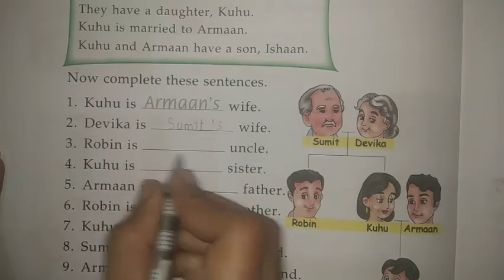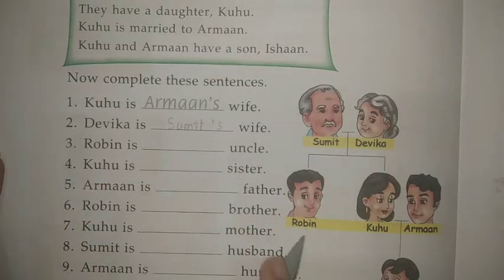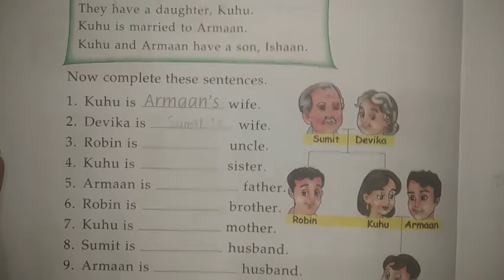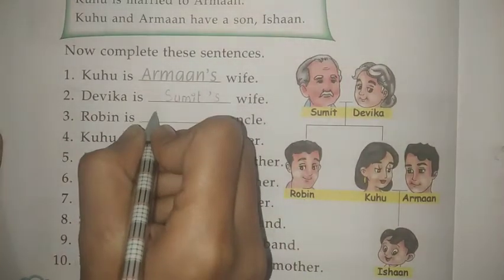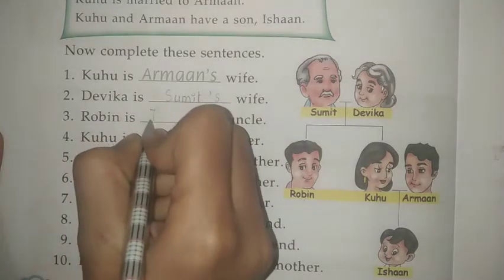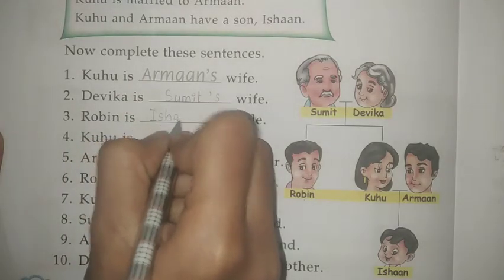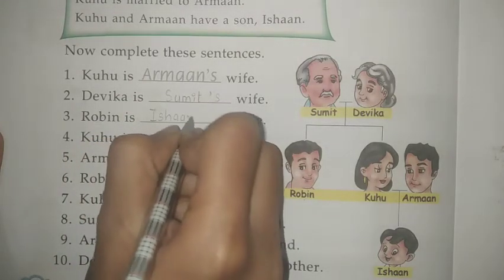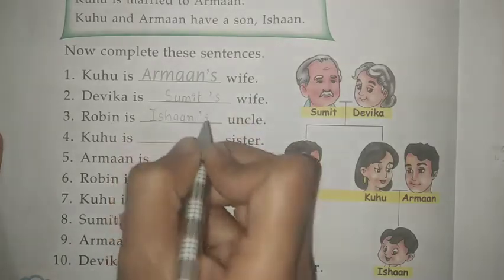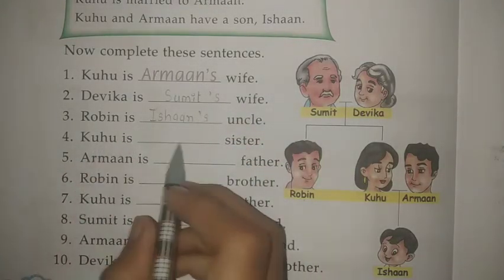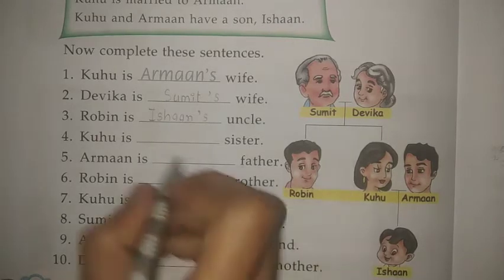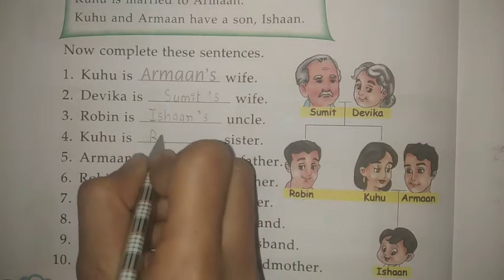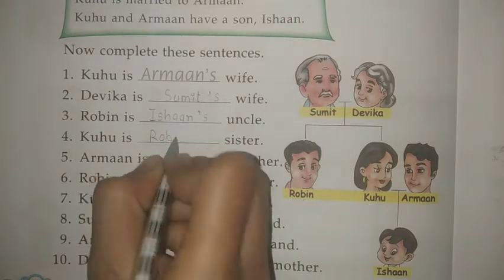Robin is dash uncle — Robin kis ke uncle hue? Toh Ishan ke. Ishan ke mama hue. He is right: Ishan's uncle. Next: Kuhu is dash sister — Kuhu kis ki behen hai? Toh Robin ki. He is right: Robin's sister.